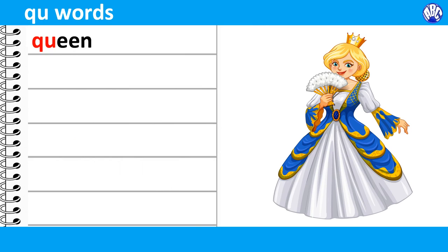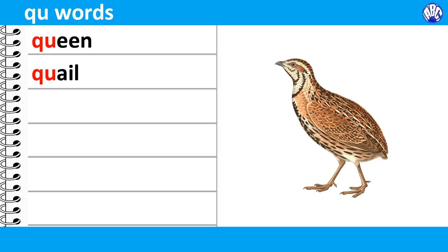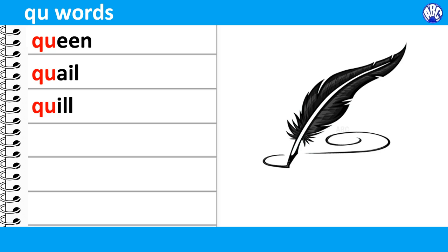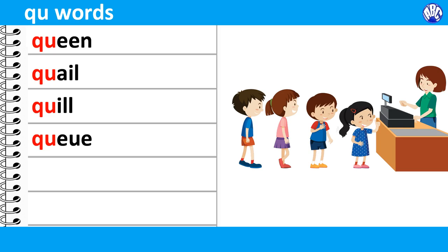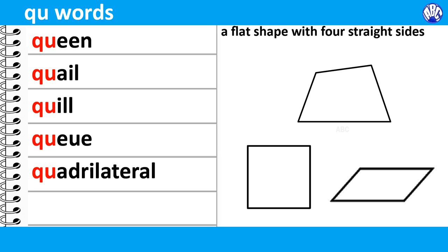QU words. The letter Q is always followed by the letter U in a word. Please check the examples: Queen, Quail, Quill, Quick.